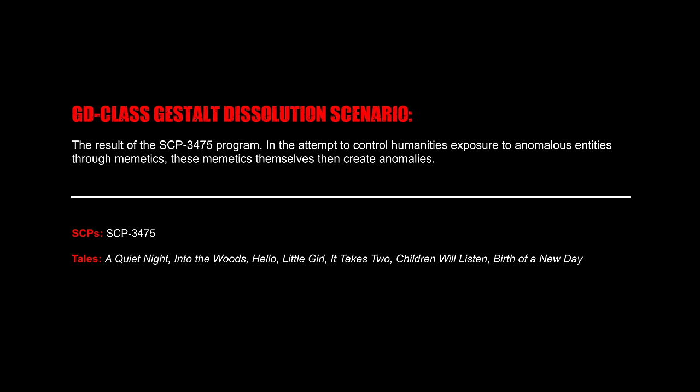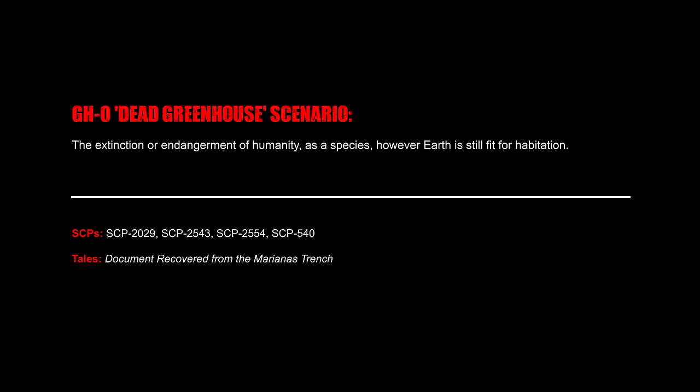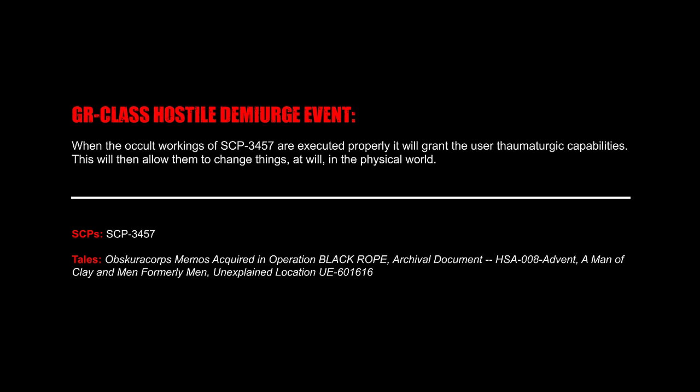GD Class Gestalt Dissolution Scenario: The result of the SCP-3475 program's attempt to control humanity's exposure to anomalous entities through memetics — these memetics themselves then create anomalies. GH0 Dead Greenhouse Scenario: The extinction or endangerment of humanity as a species, however Earth is still fit for habitation. GR Class Hostile Dam-Yearge Events: When the occult workings of SCP-3457 are executed properly, it grants the user thermoturgic capabilities, allowing them to change things at will in the physical world.